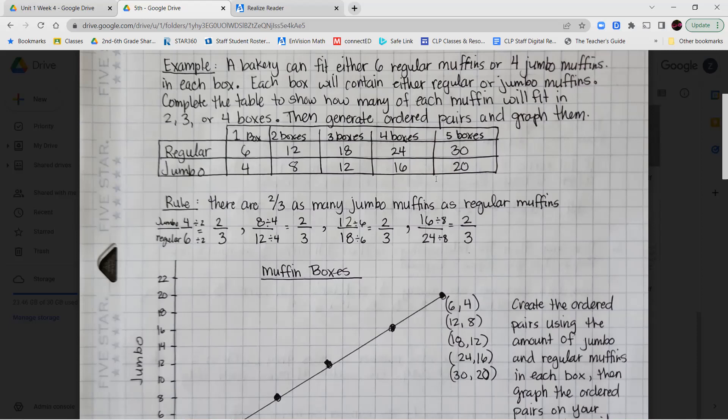So the rule here is there are two thirds as many jumbo muffins as there are regular muffins. Now, how do we know this? We know four divided by six is going to give us a simplified fraction of two thirds. 8 over 12 simplifies to two thirds. 12 over 18 simplifies to two thirds. 16 over 24 simplifies to two thirds. So we know our rule or the difference between our corresponding terms is that the jumbo muffins are two thirds as many as the regular muffins.